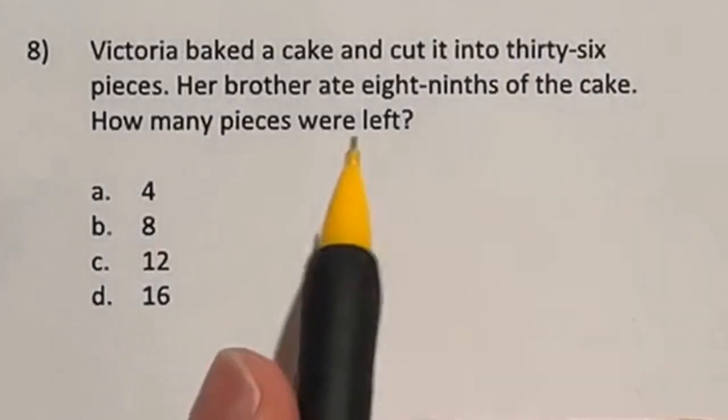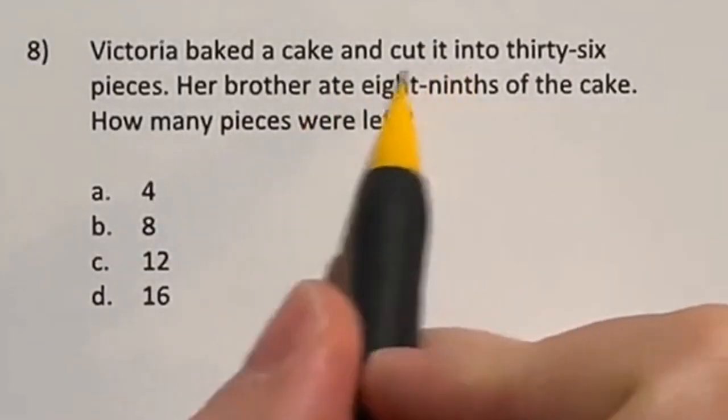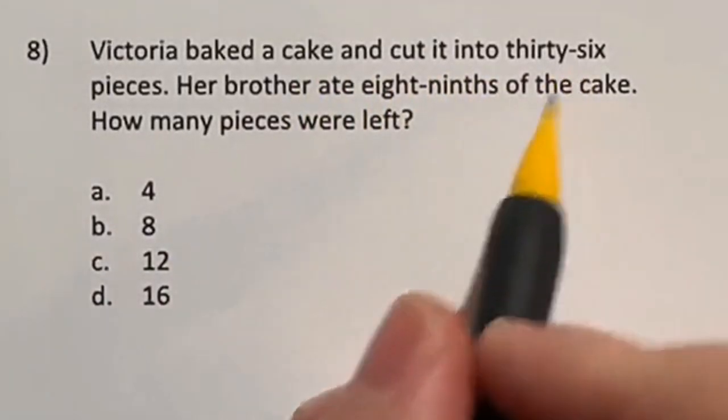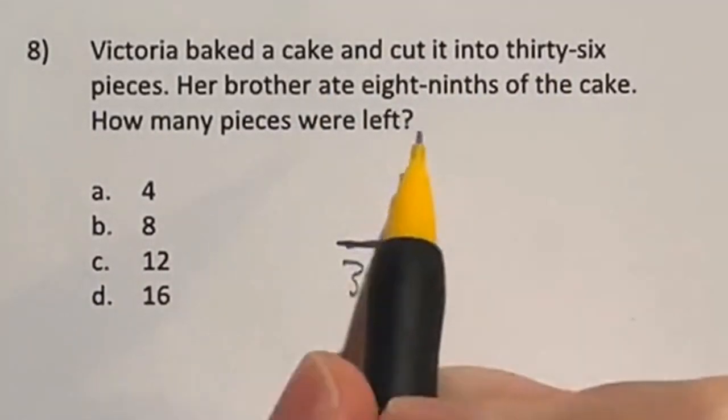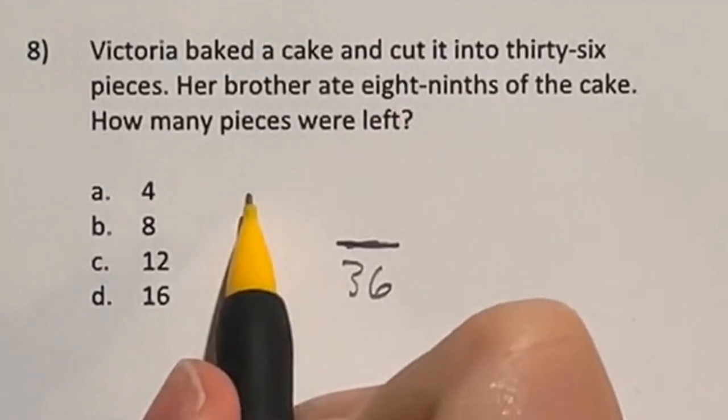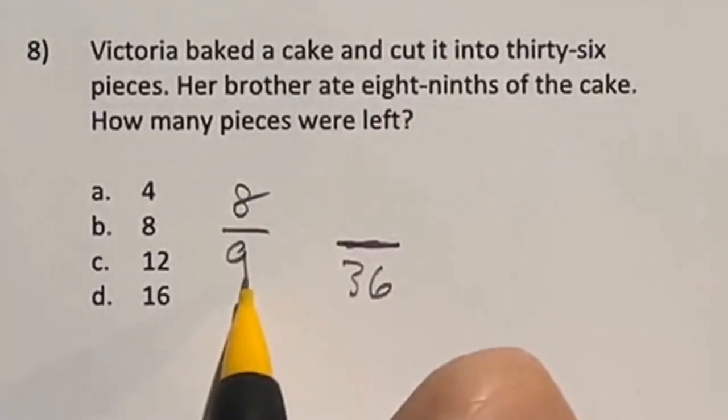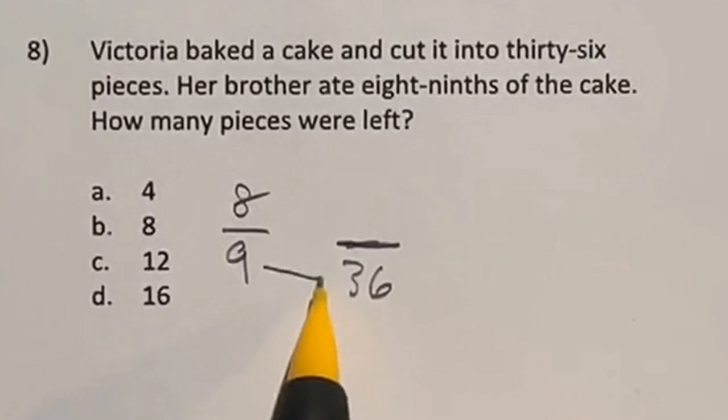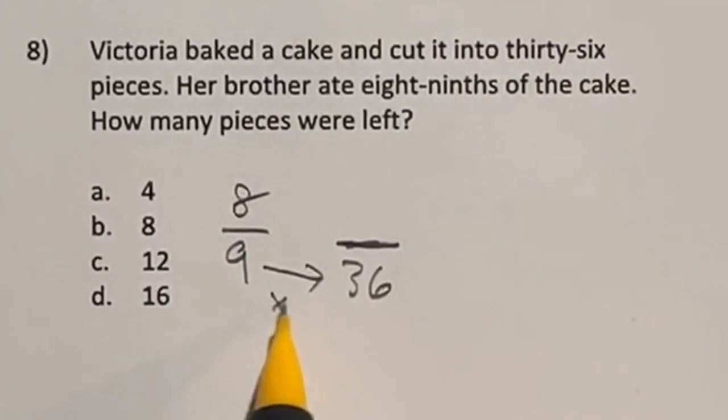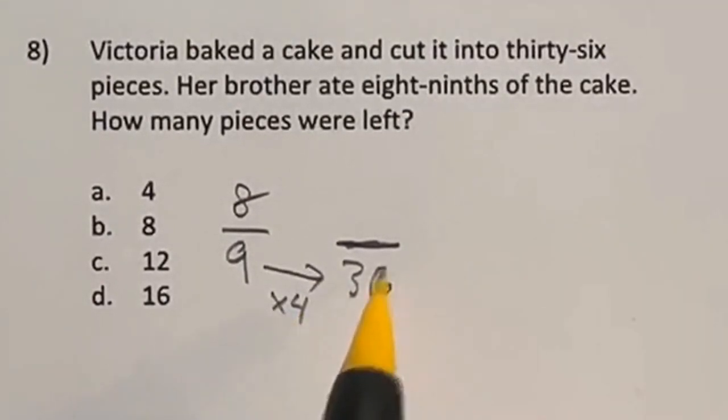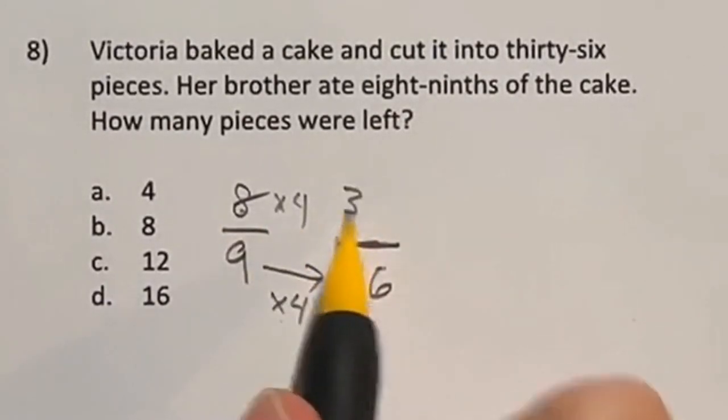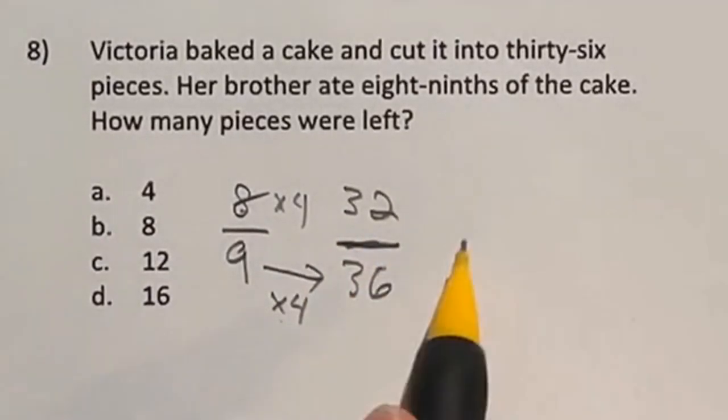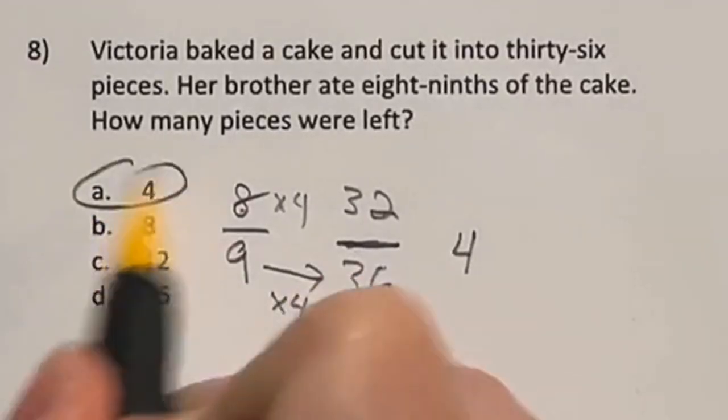So number eight deals with manipulating fractions here. It says that we have a cake that's cut into 36 pieces. Now out of there, it says that the brother ate eight over nine of that, and wants to know how many pieces are left. In order to get from nine to 36, you multiply by four. If we want this to be the same fraction, then we multiply this by four as well. Eight times four is 32, meaning that the brother ate 32 of the 36 pieces, meaning that there should be four left over. Answer A.